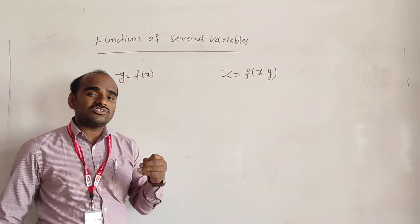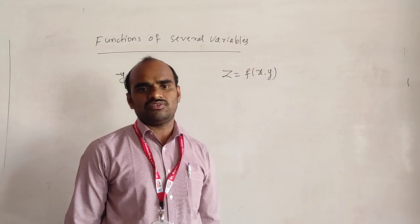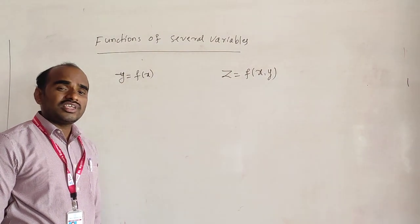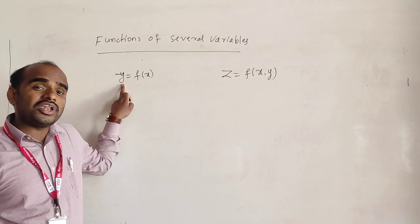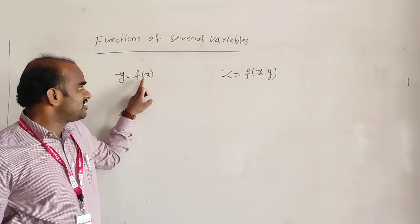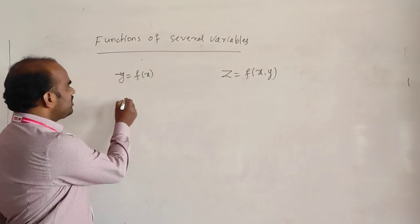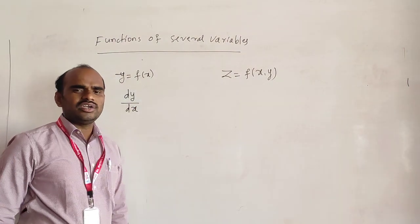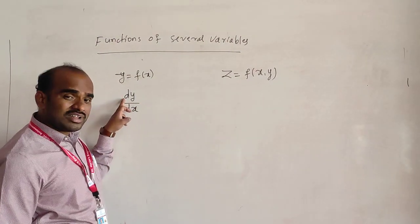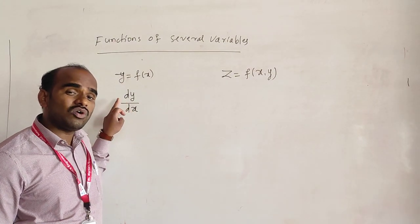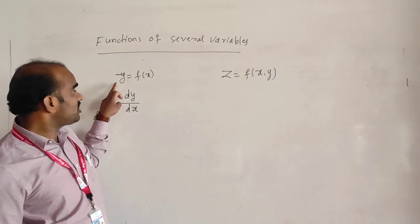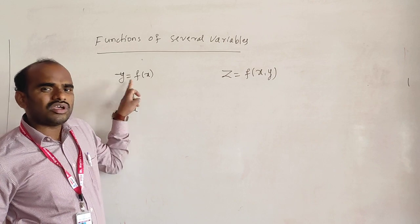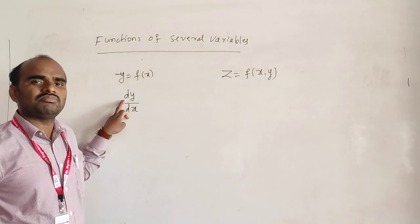Now I will discuss the differentiation of the function of several variables. Before that, what is the differentiation of the function of single variable? The rate of change of dependent variable y with respect to x is called the differentiation of y with respect to x. It is denoted by dy by dx, where d represents ordinary differentiation — the rate of change with respect to only one independent variable.